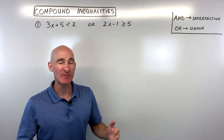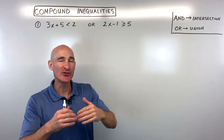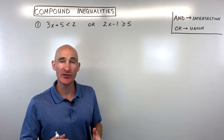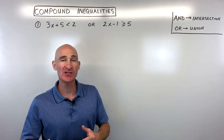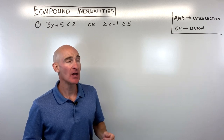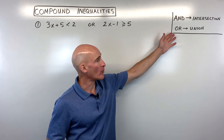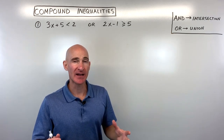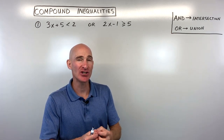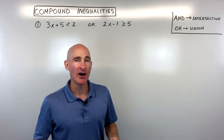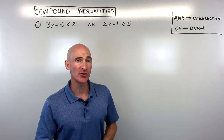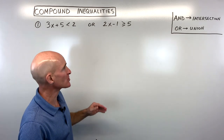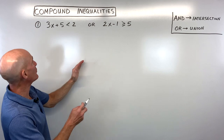What 'and' means is it's like the intersection or the overlap of the two solutions of the two inequalities, whereas 'or' represents the union, meaning it's like a combination of both of those solution sets. We're going to see how this works in these four examples.